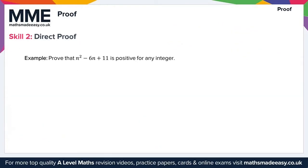Moving on to skill 2, which is direct proof — sometimes known as proof by deduction. A direct proof is where a statement is proven to be true using fundamental mathematical principles. In this example, we want to prove that n squared minus 6n plus 11 is positive for any integer. To do this, we simply complete the square, giving us (n minus 3) squared, and then we subtract 9 (the square of minus 3).